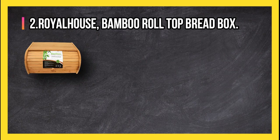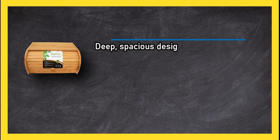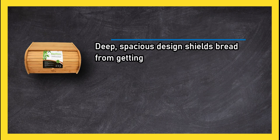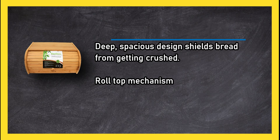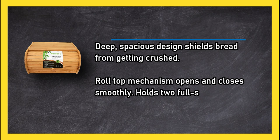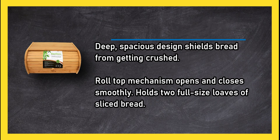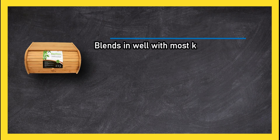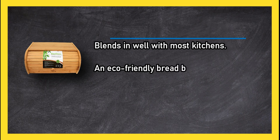At number 2, Royal House bamboo roll top bread box. Deep spacious design shields bread from getting crushed. Roll top mechanism opens and closes smoothly. Holds two full-size loaves of sliced bread. Blends in well with most kitchens. An eco-friendly bread box with natural antibacterial properties as well as heat, stain, and odor resistance.